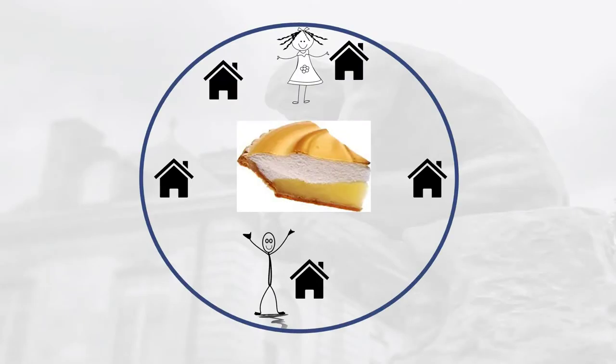That might sound a bit complex, but let me use an example to demonstrate how simple it really is. Some of you may remember Bob and Mary from an earlier session. Bob had baked a lemon meringue pie, put it on his windowsill to cool, and someone had stolen it.